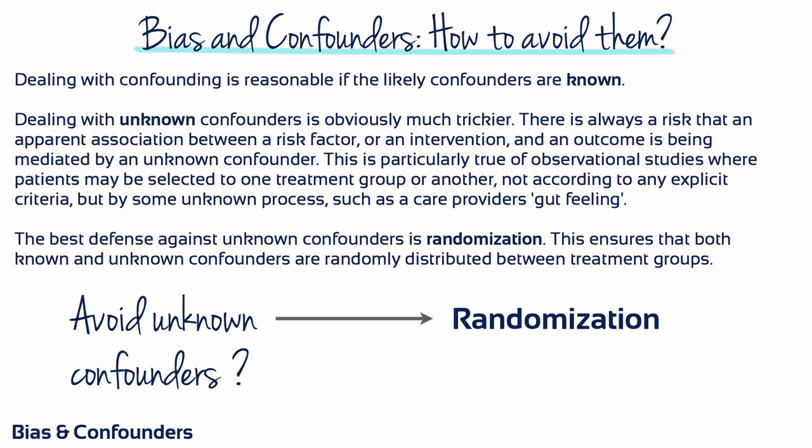To sum up, dealing with confounding is reasonable if you know what the likely confounders are. However, dealing with unknown confounders is obviously much trickier. There is always a risk that an apparent association between a risk factor or an intervention and an outcome is being mediated by an unknown confounder. This is particularly true of observational studies where patients may be selected to one treatment group or another, not according to any explicit criteria, but by some unknown process, such as a care provider's gut feeling. The best defence against unknown confounders is also randomisation. This ensures that both known and unknown confounders are randomly distributed between treatment groups.